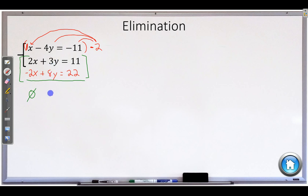8y and 3y combine to be 11y. And 11 and 22 make 33. Divide both sides by 11. And you get y is equal to 3. There's our first answer already.